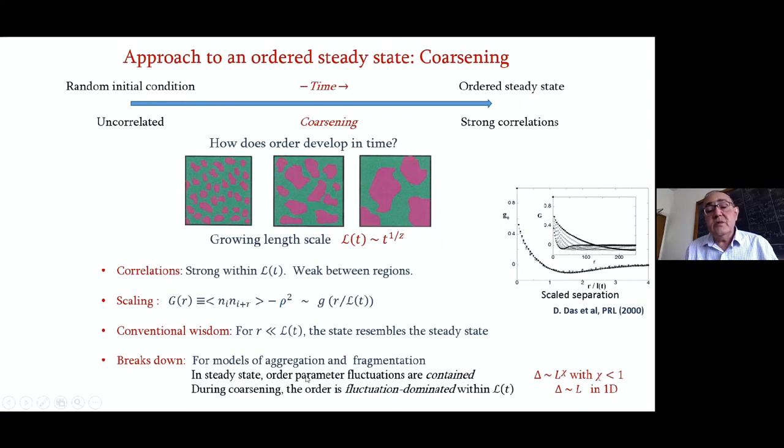Actually, this point seems to break down for models of aggregation and fragmentation. For instance, in steady state, what we'll find is that the order parameter fluctuations are contained. By contained, I mean that the fluctuations grow as the system size to some power which is smaller than one. But during coarsening, the order parameter is fluctuation dominated within L(t).